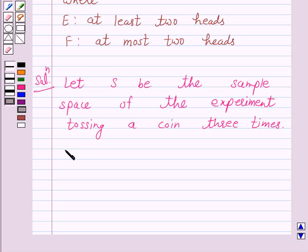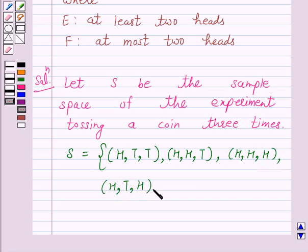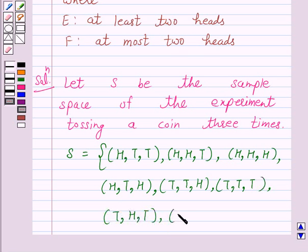So the elements of S are: S equals HTT, that is head on the first toss and tails on the second and third toss. Similarly HHT, that is heads on the first and second toss and tail on the third toss. HHH, that is heads on all three tosses. Again HTH, TTH, TTT, THT, and THH.